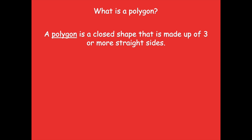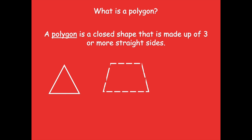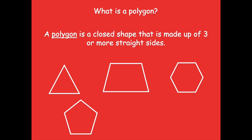Here are some examples of a polygon. This shape has three sides, this shape has four sides, this shape has six sides. Here's a five-sided shape, and here is a six-sided shape.